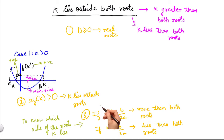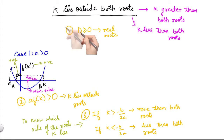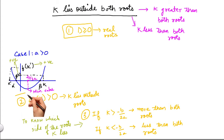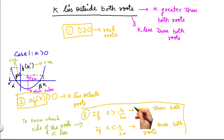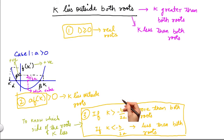Combining our three conditions: the first is that D should be greater than or equal to 0, to ensure that the equation has real roots. The second is that the product a into f(k) should be greater than 0, to ensure that k lies outside both roots. The third condition is that if k is greater than minus b by 2a, then k is more than both the roots; and if k is less than minus b by 2a, then k is less than both the roots.